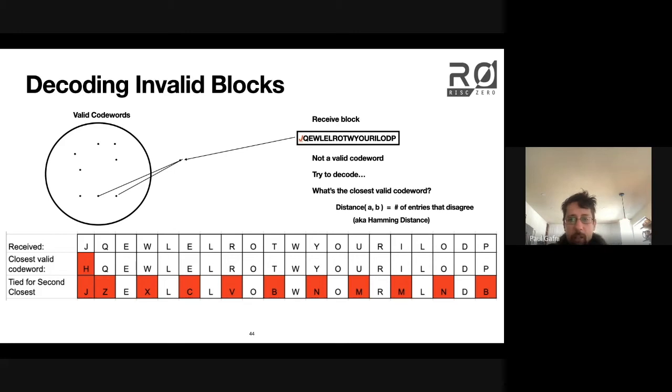The first and second rows have a distance of one from each other, whereas the first and third one have a distance of 11 from each other. It turns out that these are actually the closest and tied for second closest examples here.